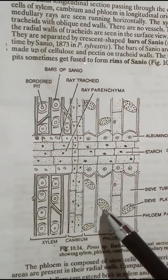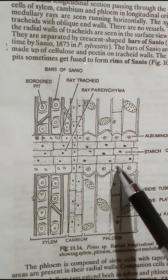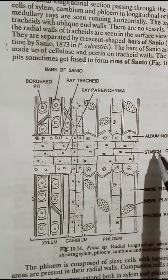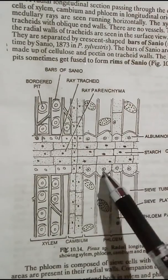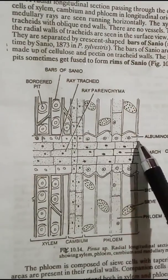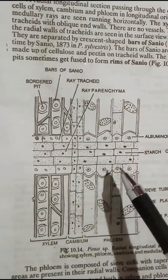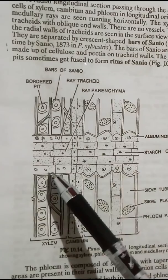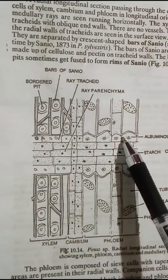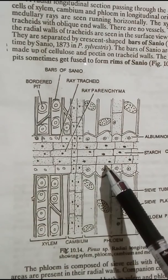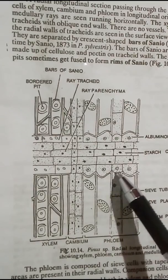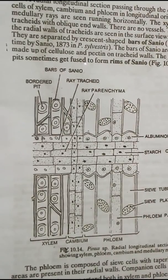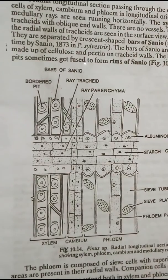In the secondary phloem, each medullary ray also consists of thin-walled parenchymatous cells filled with starch, but there are one or more layers of albuminous cells on each side of the medullary ray. This is how it differs from the xylem — it has albuminous cells on both sides of the rays, and these albuminous cells are somewhat elongated vertically.